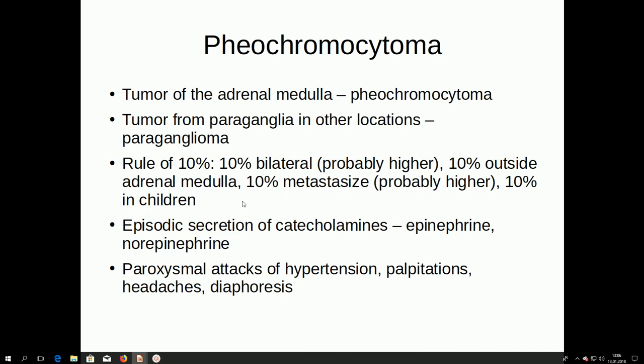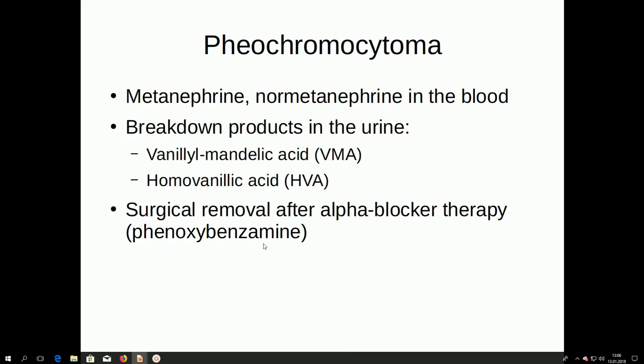Pheochromocytoma is associated with episodic secretion of catecholamines — epinephrine and norepinephrine — which is responsible for the typical clinical symptoms: paroxysmal attacks of hypertension, palpitations, headaches, and diaphoresis or profuse sweating. Diagnosis requires MRI or CT scan, plus useful tests looking for metanephrines and norepinephrine in the blood, and breakdown products in the urine such as vanillylmandelic acid or homovanillic acid.